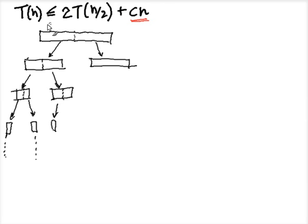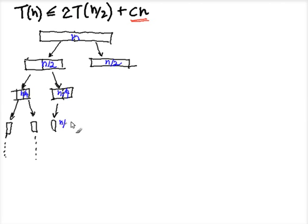Let's try to think about this in terms of the running time of merge sort. How are we going to analyze this? Let me write the size of this problem here. So this is n, this is n over 2, this is n over 4, this is n over 8. And if you keep going, you get n over 16. At the end, you have a problem of size 1.